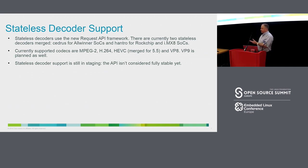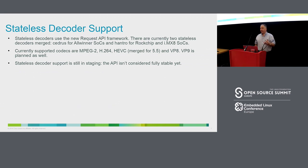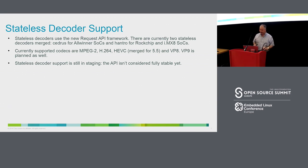Since we need to do per-frame configuration, this requires a new framework called the Request API. We currently have two drivers merged: one is Cedrus for the Allwinner SOCs, and one is Hantro, IP used in Rockchip and i.MX8. Currently supported codecs are MPEG-2, H.264, HEVC — merged last week, so brand spanking new — and VP8. VP9 is in the works but I haven't seen patches yet.